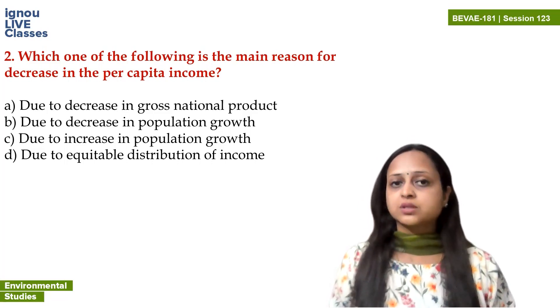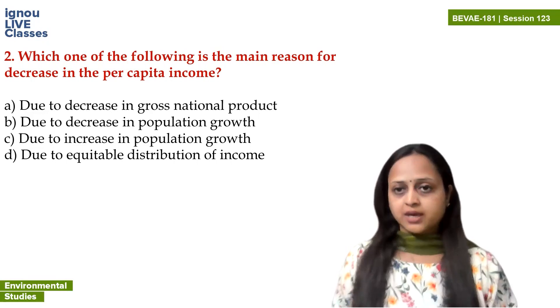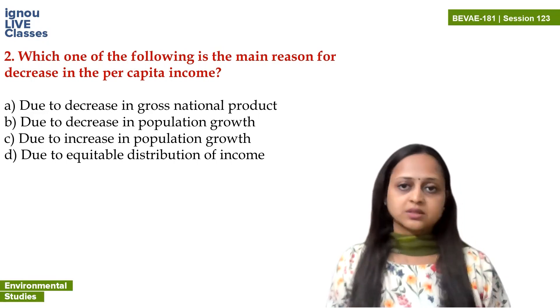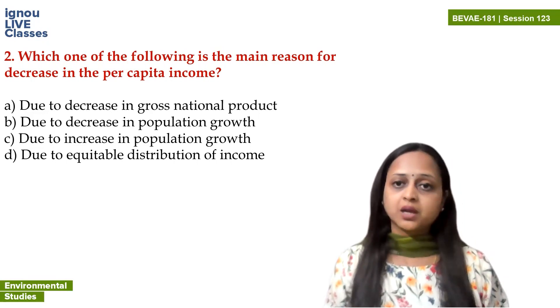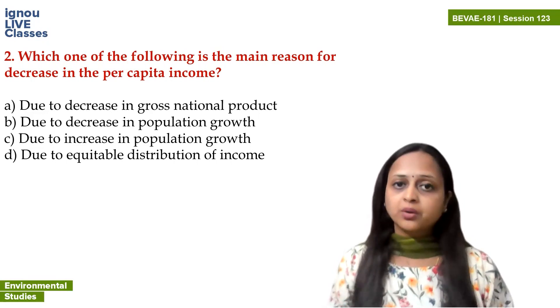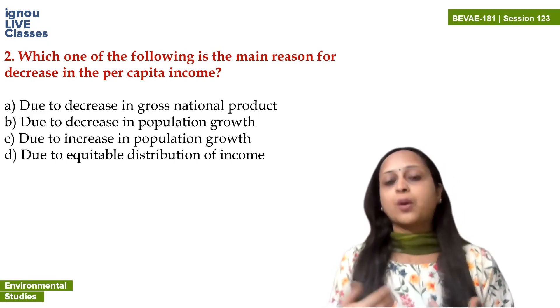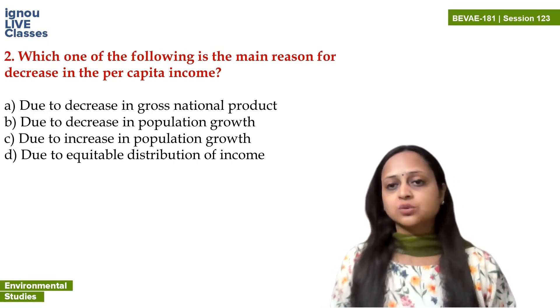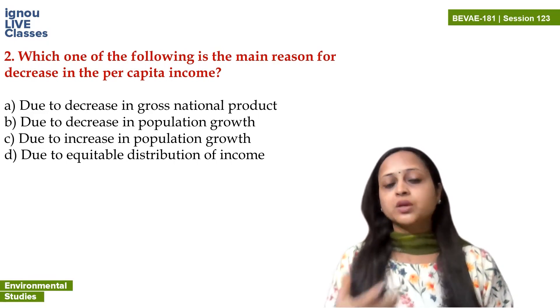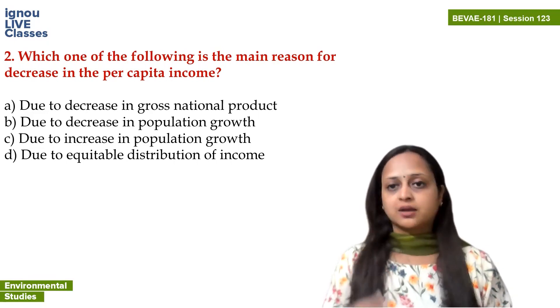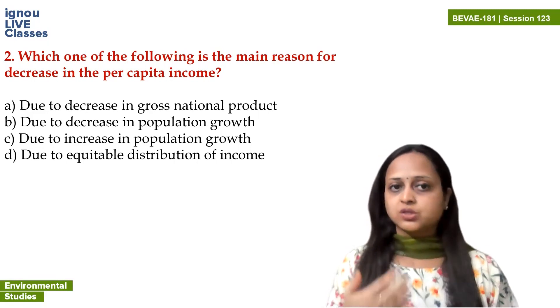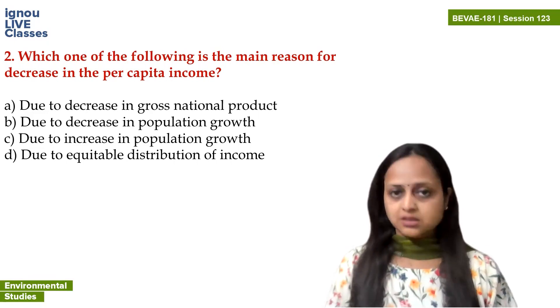The decrease in gross national product means the gross national product is also reduced. Why is it reduced? Because the population is increased. So the correct answer is C.